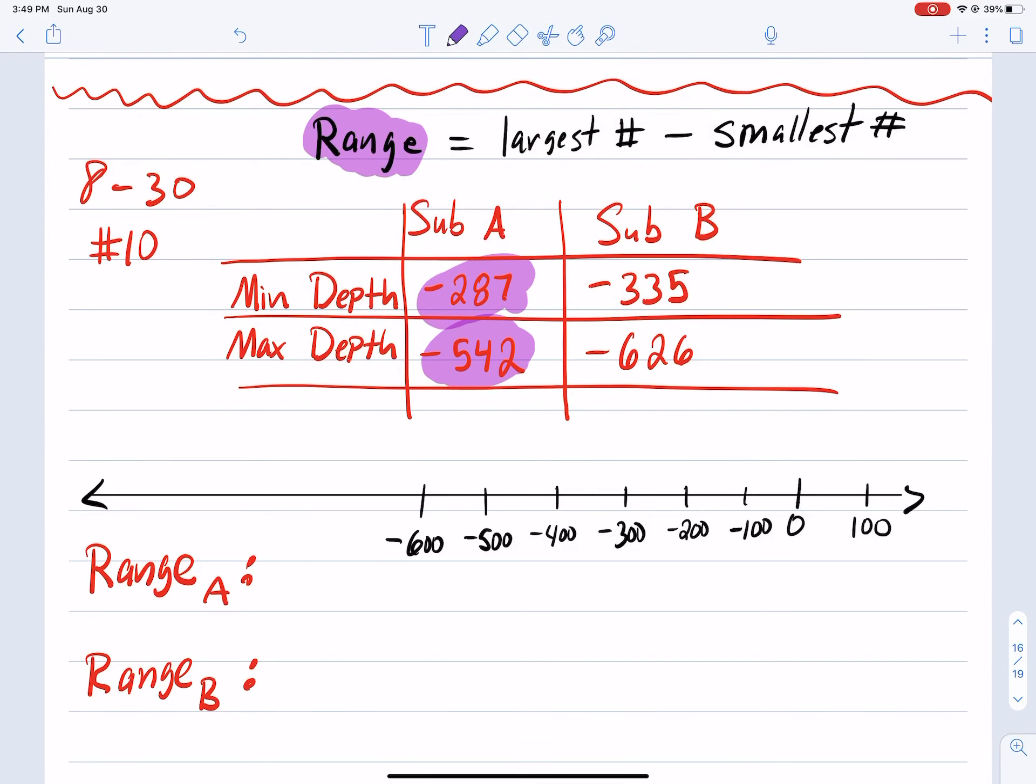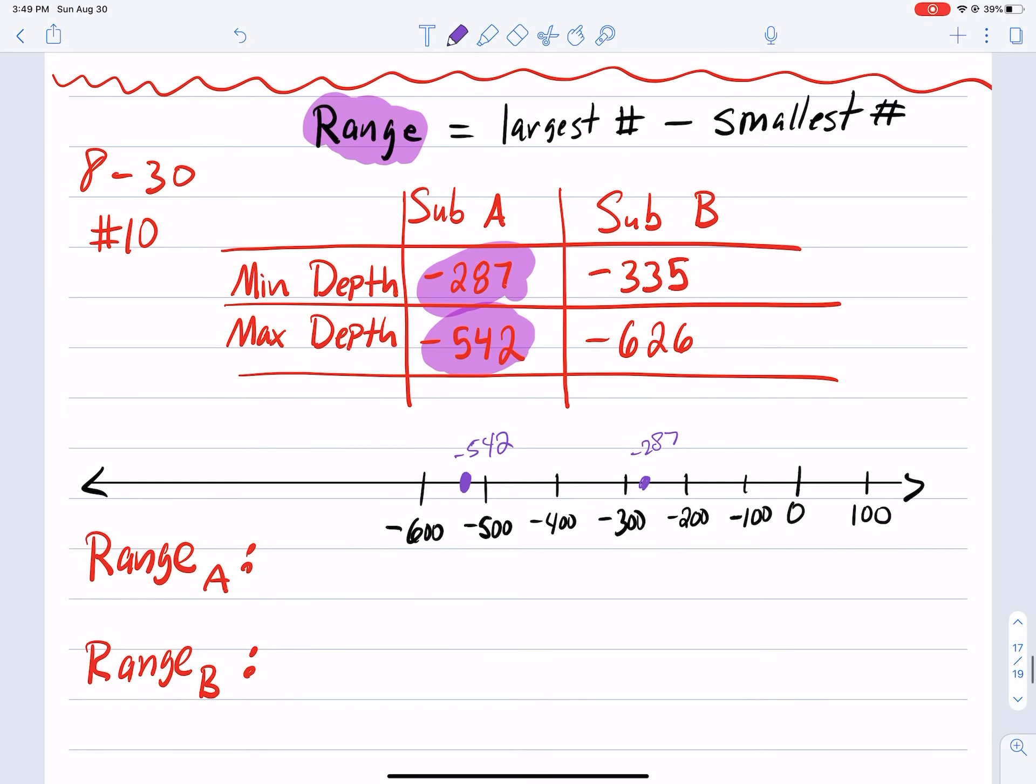The largest number negative 542 is over here somewhere. And negative 287 is over here somewhere. The larger number is 287. It's closer to zero, see it? So what you do to find the range of submarine A is you take the larger number negative 287 and subtract from it the smaller number negative 542.